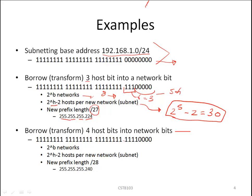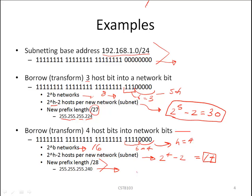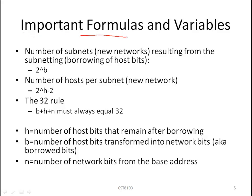In the second example, if we borrow 4 bits — b equals 4, h equals 4 — then 2 to the 4 equals 16, so we have 16 subnets. In each subnet, 2 to the 4 minus 2 equals 14, so we can assign up to 14 IP addresses per subnet. Each new network will have a subnet mask of 255.255.255.240.